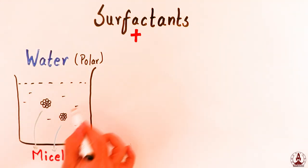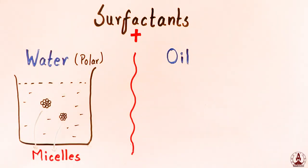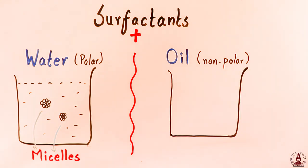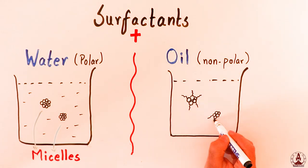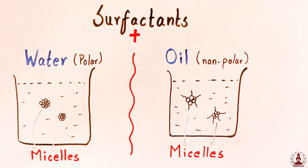Now you can guess what a surfactant will do if you keep them in oil. In a similar but opposite fashion, the heads will stick together with tails hanging outside. This crumble of surfactants has a fancy name called micelles.